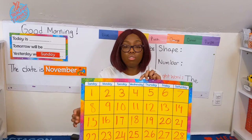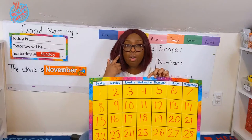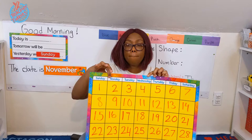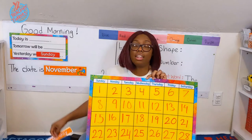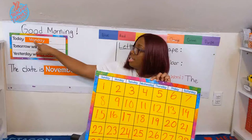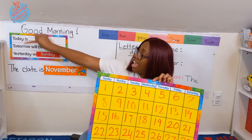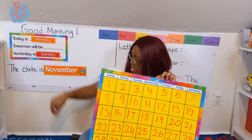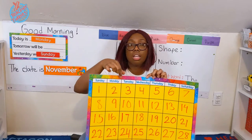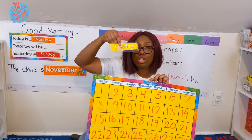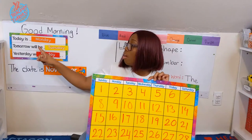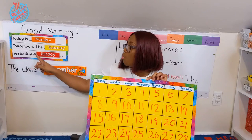We still have to figure out what today is. Well, if yesterday was Sunday, the day after Sunday is Monday. Today is Monday, all day long. Let's move it over so we can read the full sentence. So if today is Monday, tomorrow will be Tuesday. Yesterday was Sunday, today is Monday, tomorrow will be Tuesday.